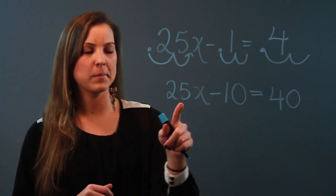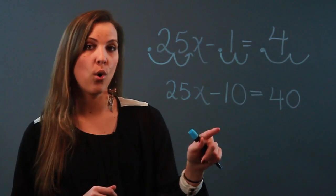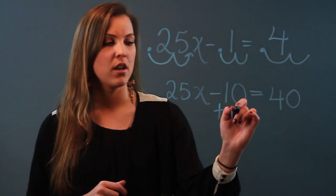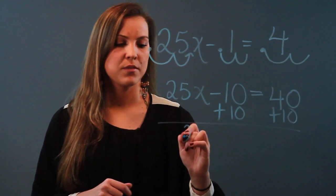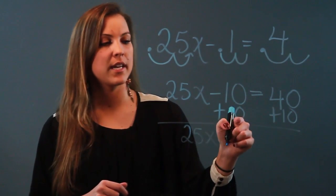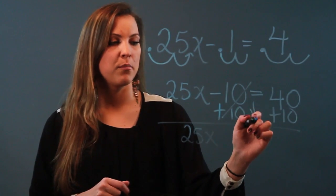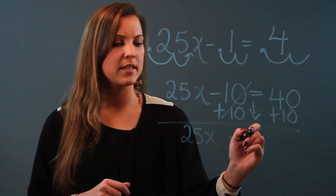So two-step equation. I have multiplication and I have subtraction. I always get rid of subtraction first. So I'm going to do plus 10 on both sides. I have 25x, negative 10 and positive 10 cancel out. Bring down your equal sign. 40 plus 10 is 50.